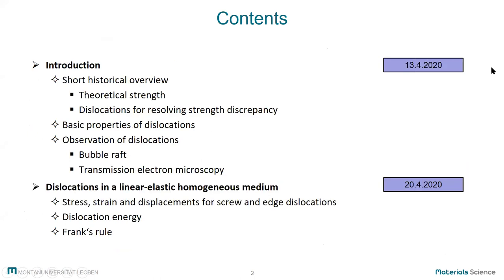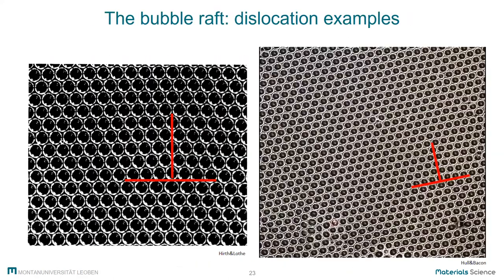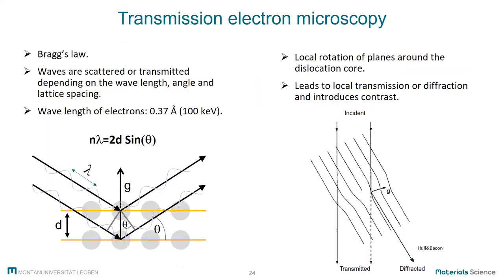So last time we were talking about dislocations in general, and we went through a few points shown here. We stopped after the bubble raft, and we are still left with transmission electron microscopy, which will be our first topic for today. Then we will go into today's topic, which is the linear elastic description of dislocations. I will now jump over the slides and go to transmission electron microscopy.